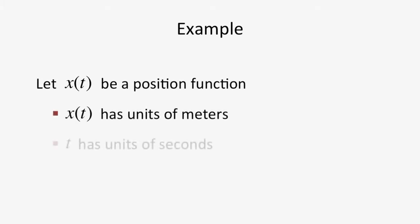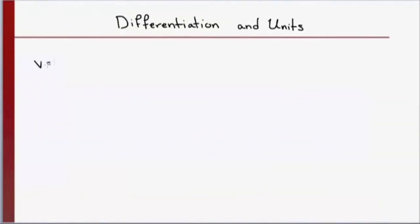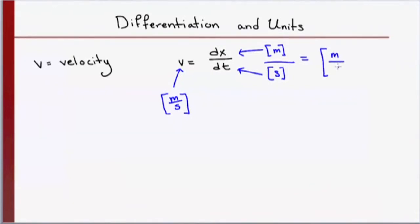So, let's do an example. Let's consider the position function, x of t, with units of meters, where t is time, with units of seconds. Then, velocity is the time derivative of position, v equals dx/dt, and has units of meters per second. Let's look at how the notation is consistent with our physical interpretation. dx has units of meters, and it is being divided by dt, which has units of seconds. So, dx over dt should have units of meters over seconds.